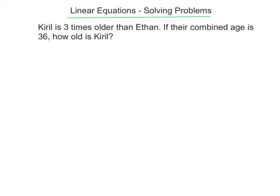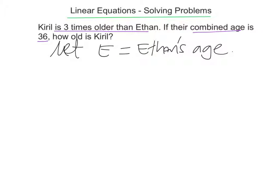In this next problem, it says that Kirill is 3 times older than Ethan, and the combined age is 36. So I need to write that down as an equation, and I'm going to let E equal Ethan's age. I usually find it's easier to pick the younger one to be the symbol. And Ethan being younger than Kirill, I'm going to make E be Ethan's age. So we know that Kirill's age is going to be 3 times that, so it's going to be 3 times Ethan's age, and I can write it like that, 3E.